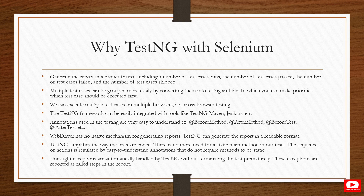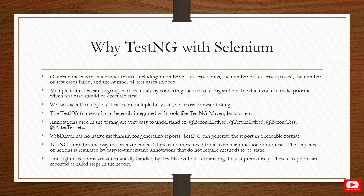Multiple test cases can be easily grouped and integrated into the TestNG XML file. TestNG uses one XML file — whether using a Maven project or normal project — to launch and trigger all test cases written in any language like Java, C#, Perl, or Python. It also provides a good feature for prioritizing test cases, so you can define which test case executes first and which executes next.